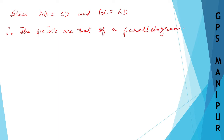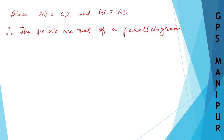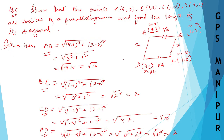Now they are also asking us to find the length of each diagonal. A, B, C, D are vertices of the parallelogram, so we need to find the diagonals. The diagonals are AC and BD, so let us find them.